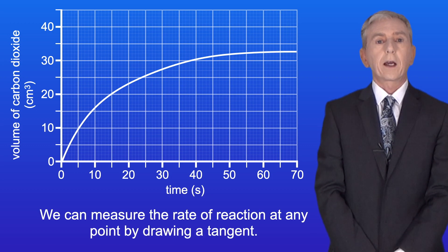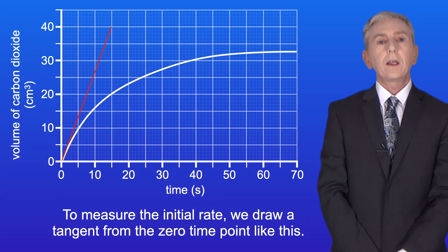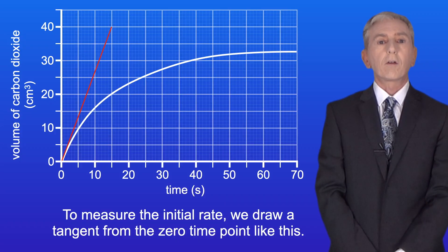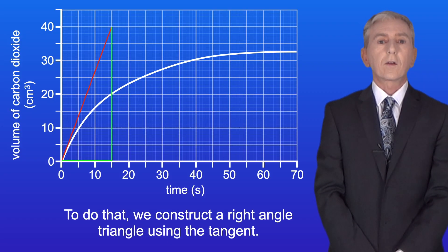Now we can measure the rate of reaction at any point by drawing a tangent. I'm going to measure the initial rate and the rate at 30 seconds. To measure the initial rate we draw a tangent from the zero time point like this. We now need to measure the gradient of the tangent. To do that we construct a right angle triangle using the tangent.